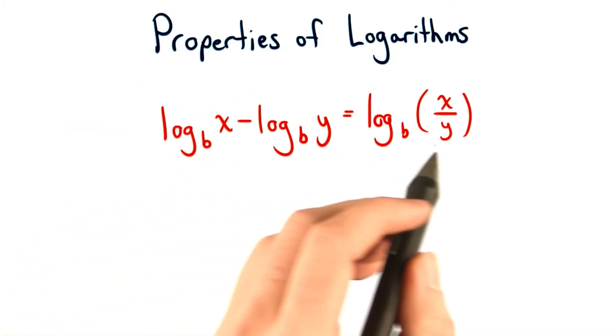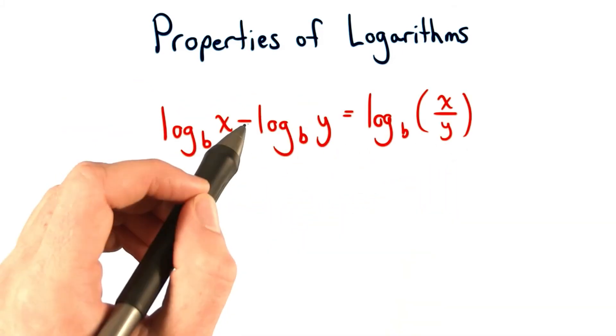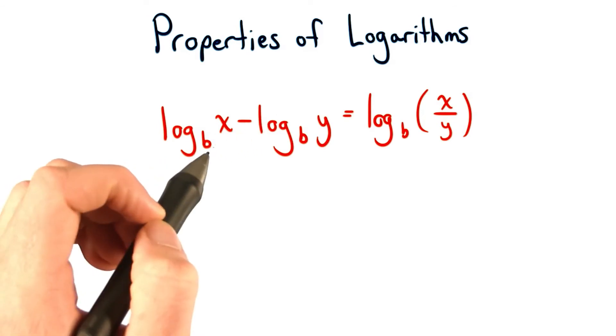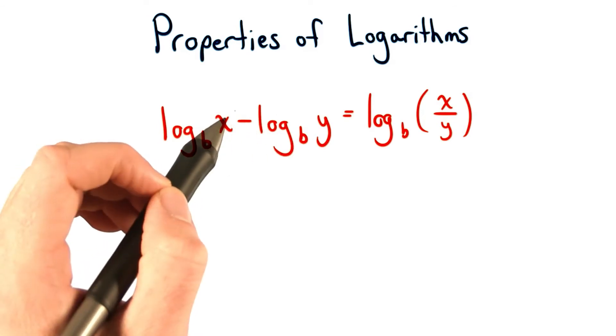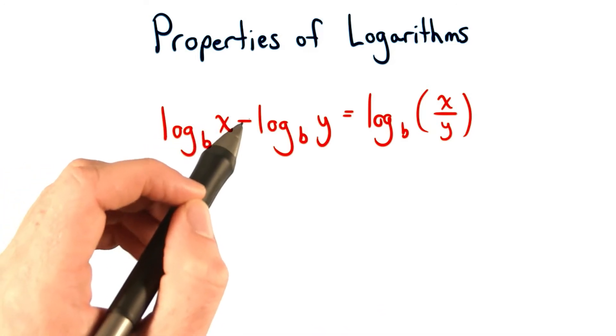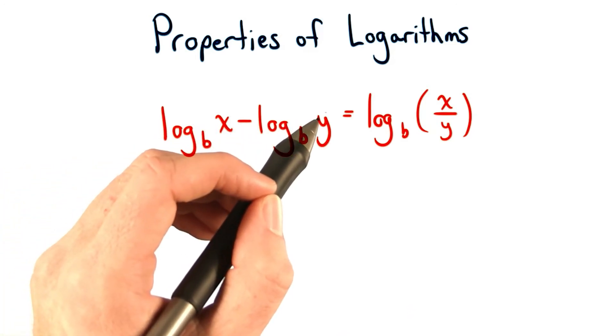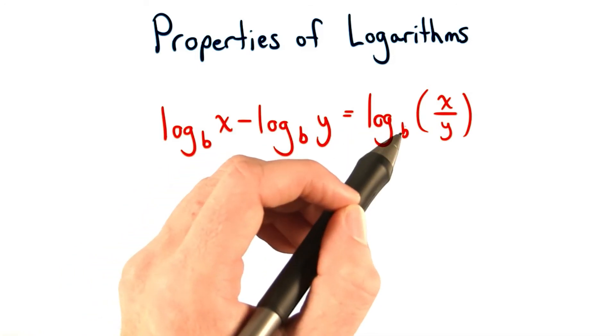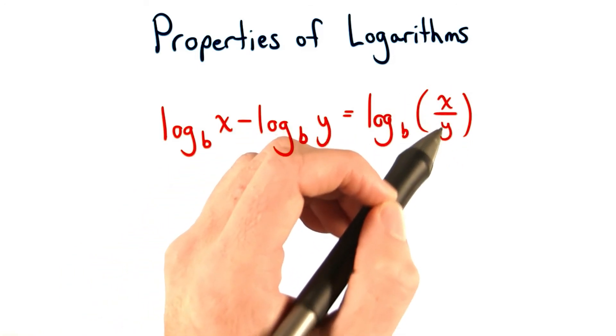And finally, here's the last logarithm property we'll examine. If we subtract two logarithms that have the same base, then we can just divide the two numbers. So the log with base b of x minus the log of base b of y equals the log of base b of x divided by y.